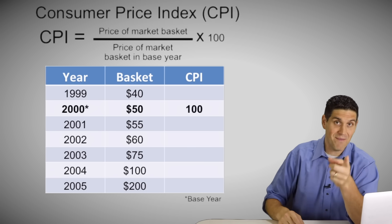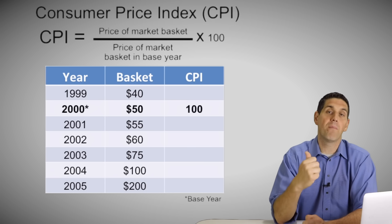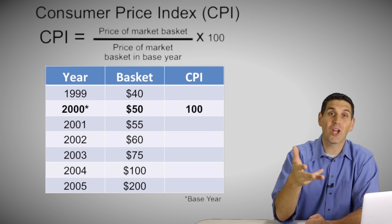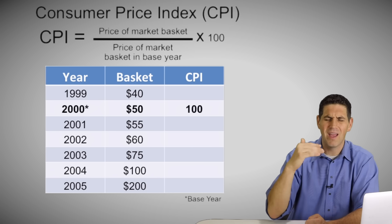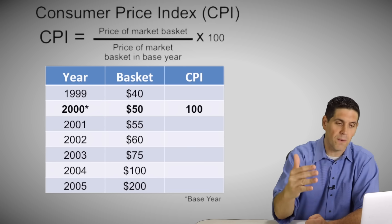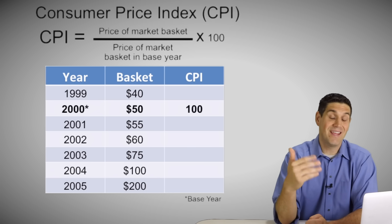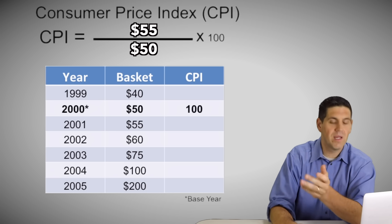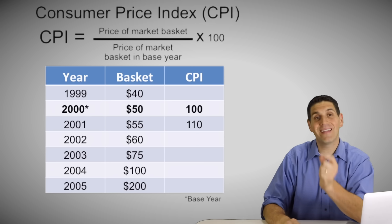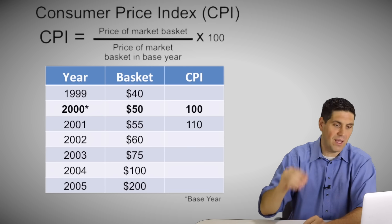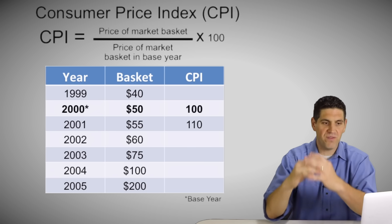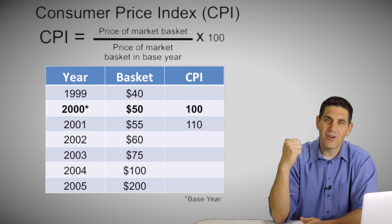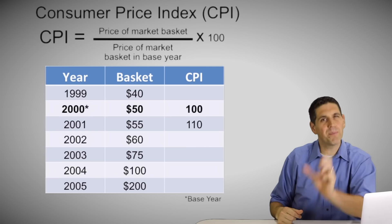Go ahead and pause the video and calculate the CPI for every single one of these years relative to 2000, when the market basket was $50. In 2001, the market basket is $55 — that's up from 50, so this number is going to be greater than 100. Prices increased by $5, and $5 is 10% of 50. So it's 55 divided by 50 times 100, which pops out 110. Prices increased 10% since the base year — the CPI is not a percentage, but you can find the percentage relatively easily.